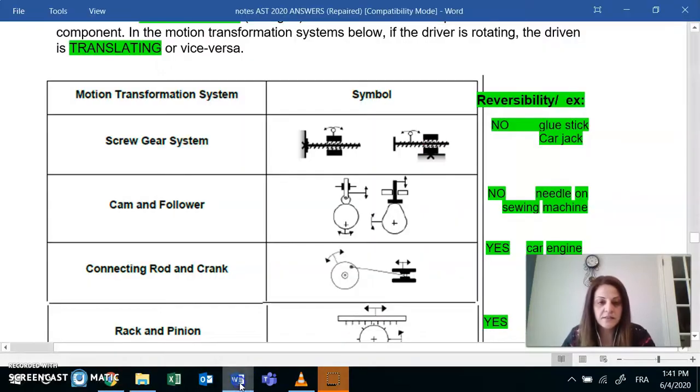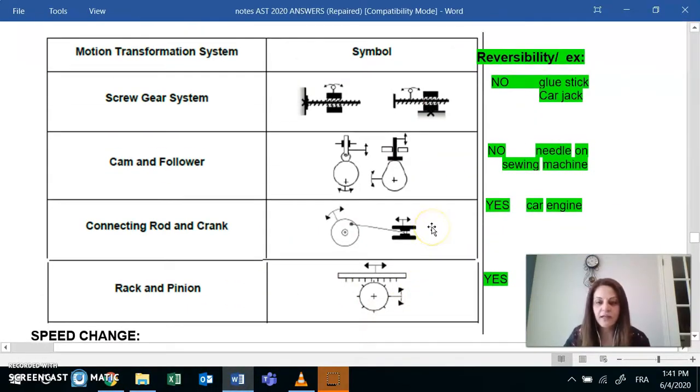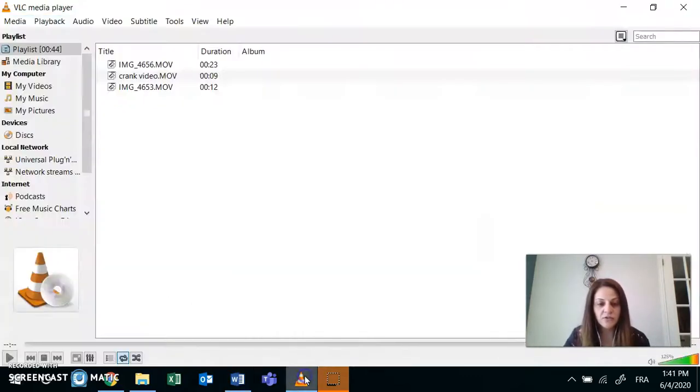Next in the list is the connecting rod and crank. A bit like you find on a train or in the car engine. So as the crank moves in a rotational motion, the connecting rod will go back and forth as such. Is it reversible? Yes, you could go back and forth, which will cause a rotation. And I took a short video on that from school.